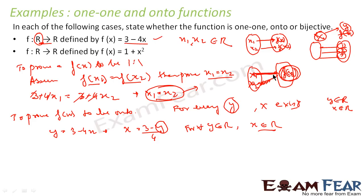Let's understand the steps. This is a different approach: instead of finding the domain and codomain, we use logic directly. To prove a function is one-to-one, we assume f(x1) = f(x2) and then prove x1 = x2. To prove a function is onto, we prove that for every y in R there exists an x in R.